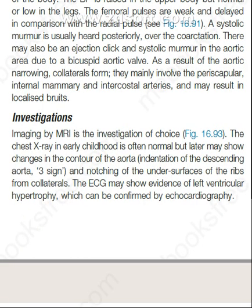Now the investigations. Imaging by MRI is the investigation of choice. The chest X-ray in early childhood is often normal, but later may show changes in the contour of the aorta. Indentation of the descending aorta is called the 3 sign, and notching of the undersurfaces of the ribs from collaterals. The ECG may show evidence of left ventricular hypertrophy, which can be confirmed by echocardiography.